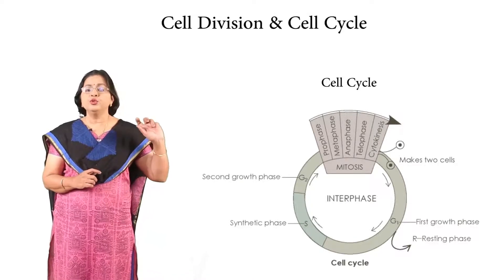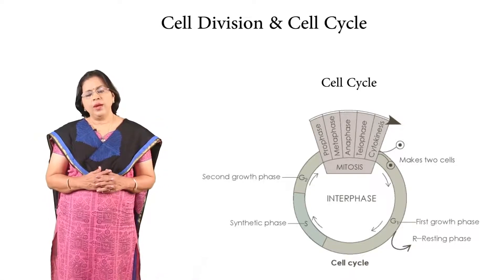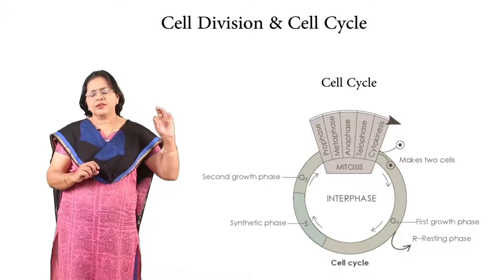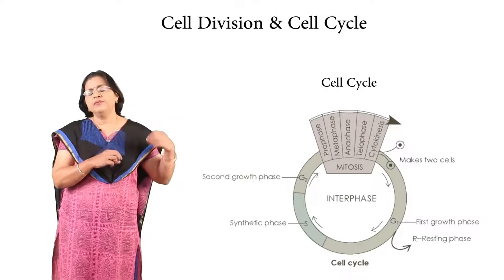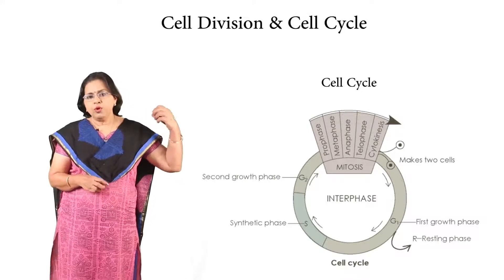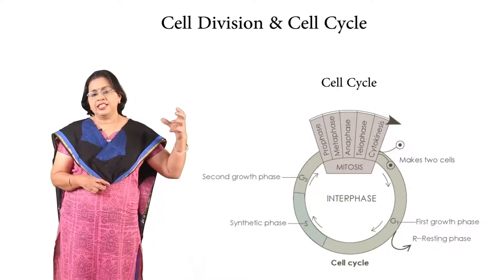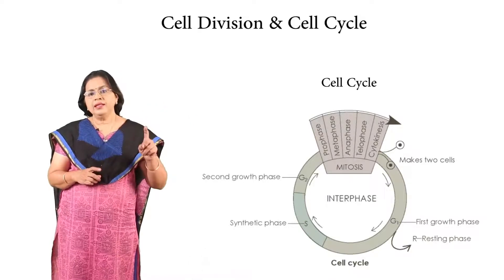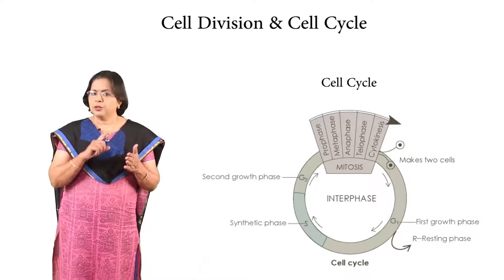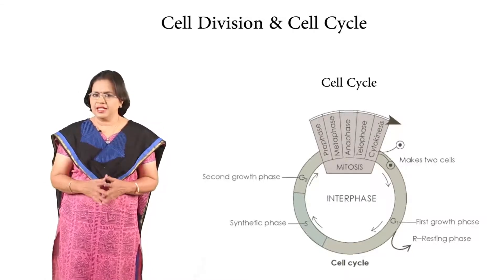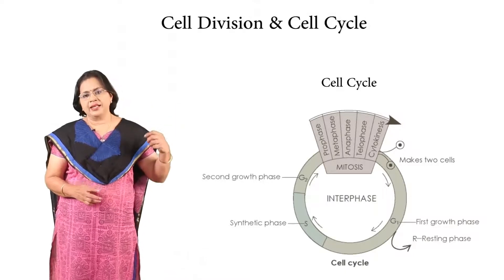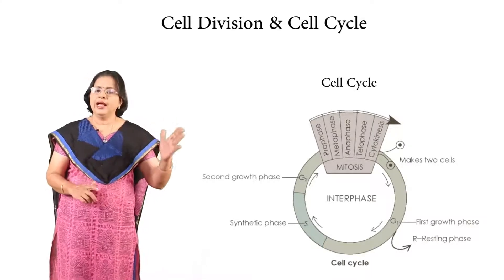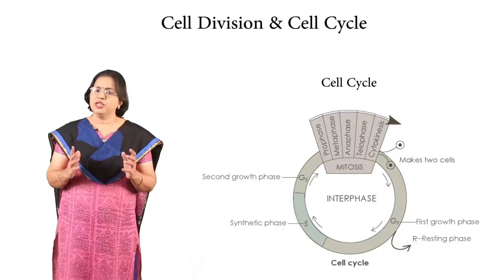After the synthesis stage, it enters into G2 — the growth 2 stage — where the disappearance of the nuclear membrane, centrioles, and related activity takes place. In G2, more RNA and other materials are produced because asters have to be formed and more protein will be required. Then the cell enters the cell division phase: prophase, metaphase, anaphase, telophase, and cytokinesis. This makes up the cell cycle, which consists of interphase — G1, S, G2 — and the five phases of cell division.